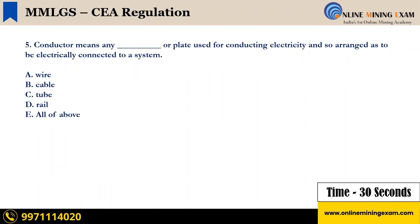Conductor means any dash or plate used for conducting electricity and so arranged as to be electrically connected to a system. The options are: A) Wire, B) Cable, C) Tube, D) Rail, E) All of the above. Your time starts now.